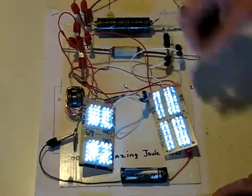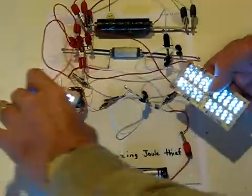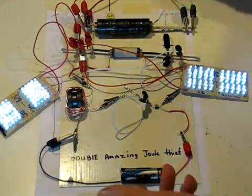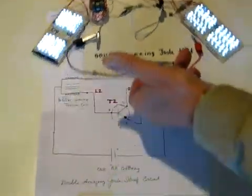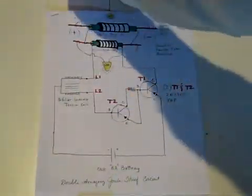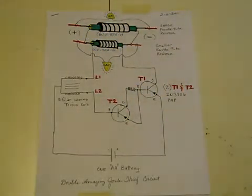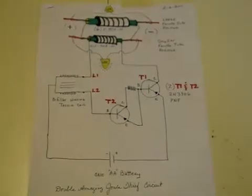Okay and I call this circuit the double amazing jewel thief. Pretty simple. And now for the good part. I'm going to slide this up here and turn the power off and hopefully zoom in on this to where you can see it.